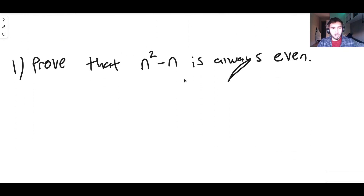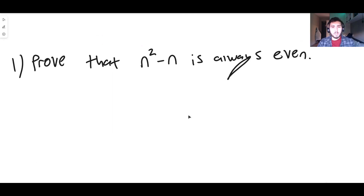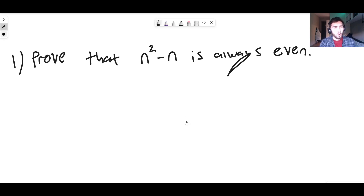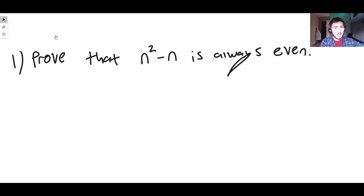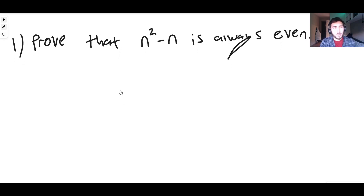Here's the first question: prove that n squared minus n is always even. We need to consider the case where n is odd and the case where n is even separately. What you definitely should not do is just try specific values of n, because it would take an infinite amount of time to prove it for every n. We want to show it holds for every single n.